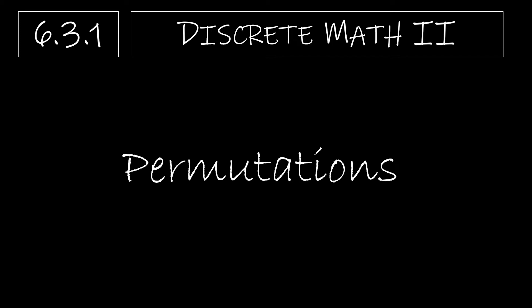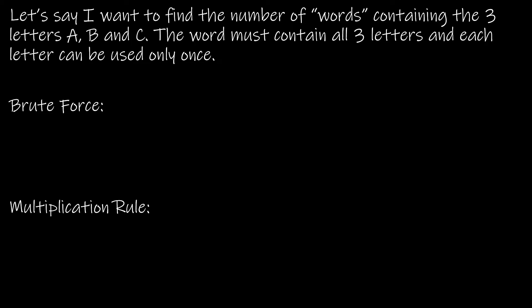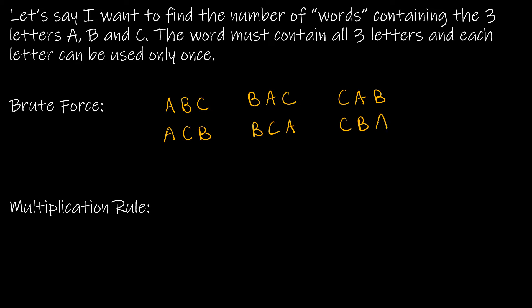This is the first video for section 6.3 covering permutations. Let's start with an example: find the number of 'words' containing the letters A, B, and C where the word must contain all three letters and each letter can be used only once. Using brute force: ABC, ACB, BAC, BCA, CAB, CBA — so there are six ways to do it.